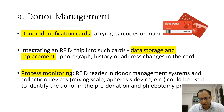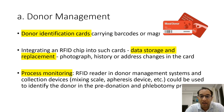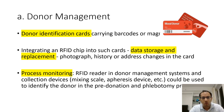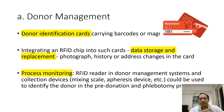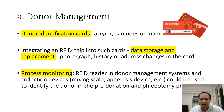Coming to various aspects of where RFID is useful: for donor identification, you can have identification cards that carry barcodes and integrate RFID chips. These chips can store and replace photograph, history, address — everything can be replaced with just an RFID chip.